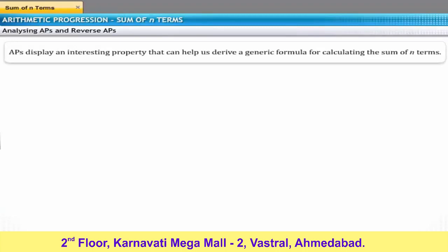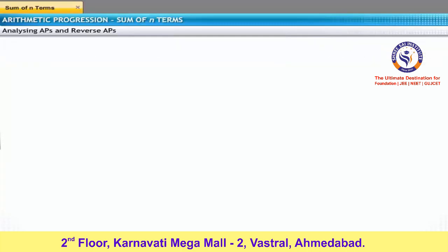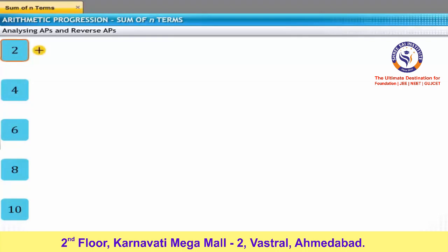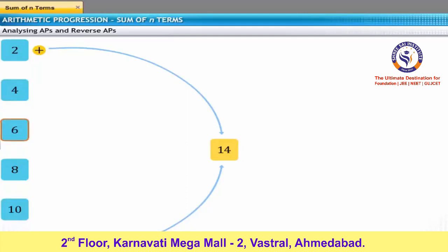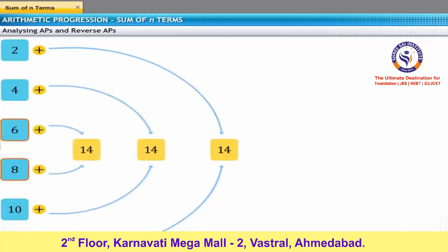APs display an interesting property that can help us derive a generic formula for calculating the sum of N terms. Take an example of the sequence 2, 4, 6, 8, 10, and 12. If you add the first term, 2, to the last term, 12, the sum equals 14. Similarly, if you add the second term to the fifth term, and the third term to the fourth term, you get 4 plus 10 equals 14, and 6 plus 8 equals 14. As you can see, the result of these additions is equal.